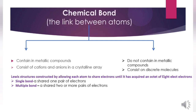Chemical bonding is the link between atoms. Compounds that contain a metallic element typically form ionic compounds, consisting of cations and anions in a crystalline array. The bonding in ionic compounds is due to the coulombic interactions between all the ions in the crystal, and it is inappropriate to refer to a bond between a specific pair of neighboring ions.